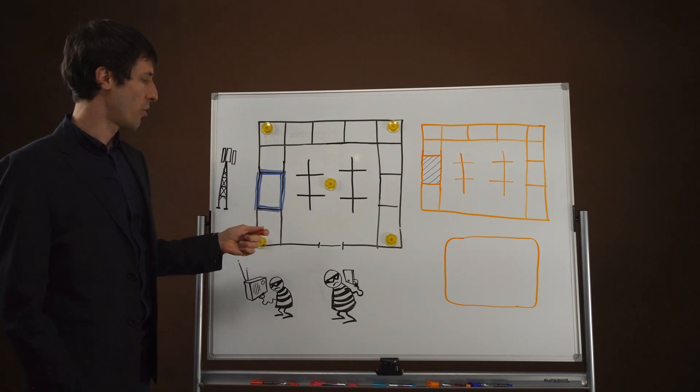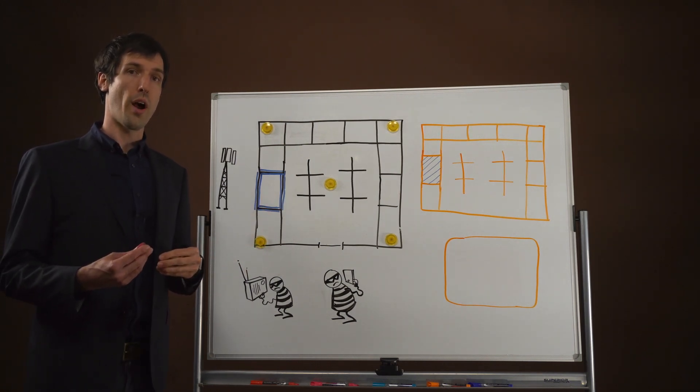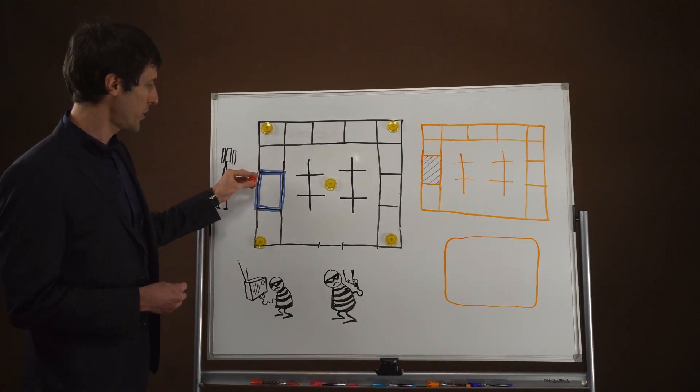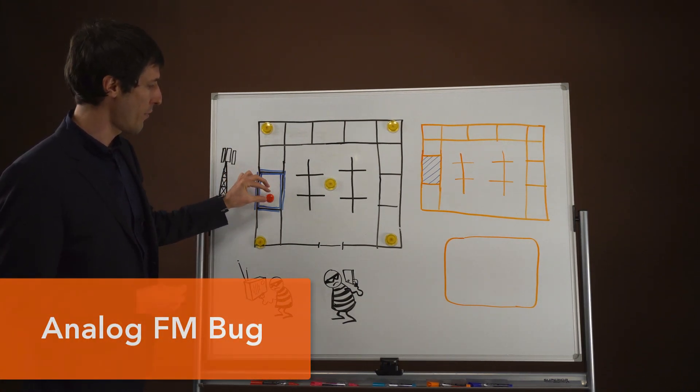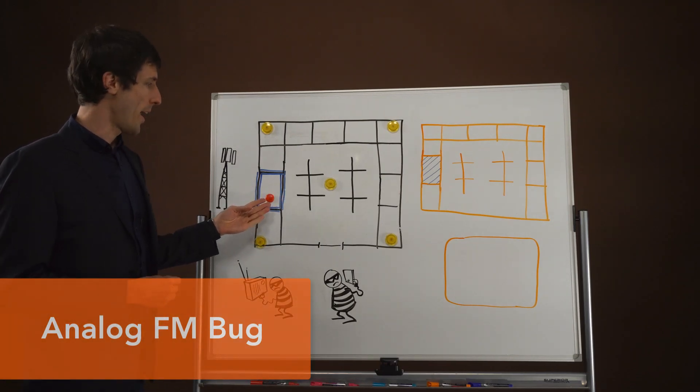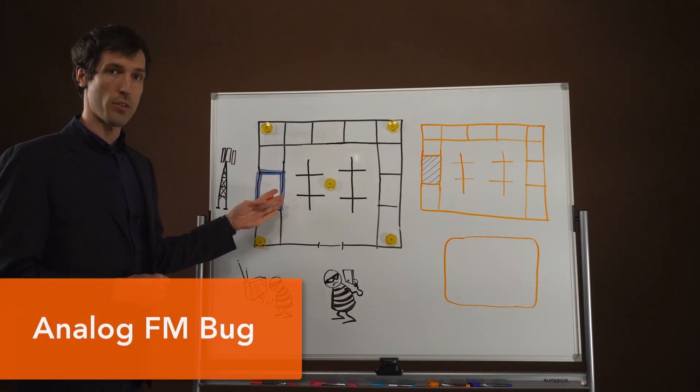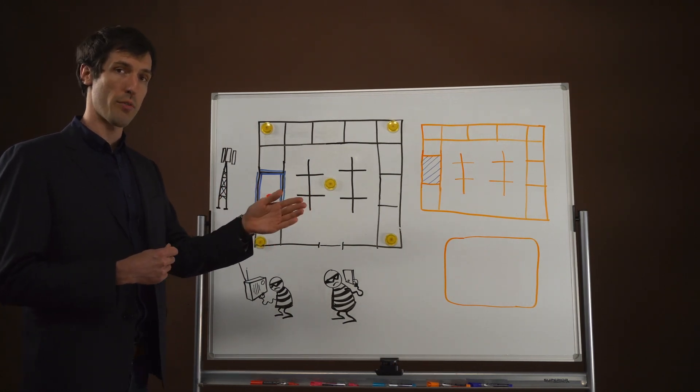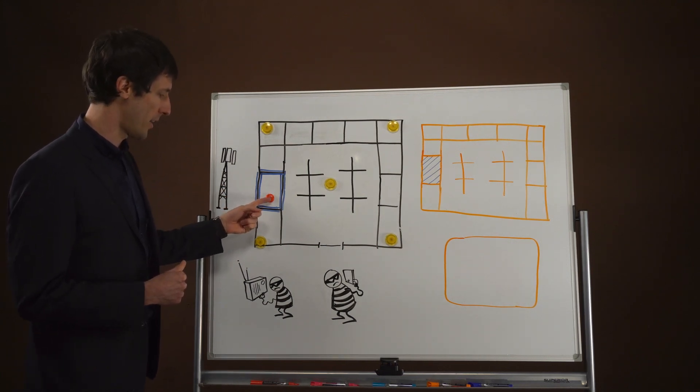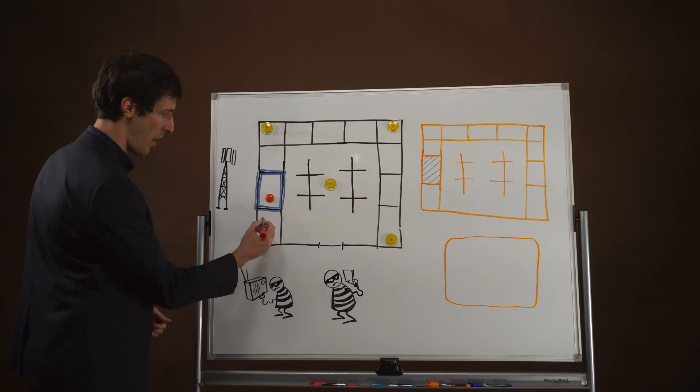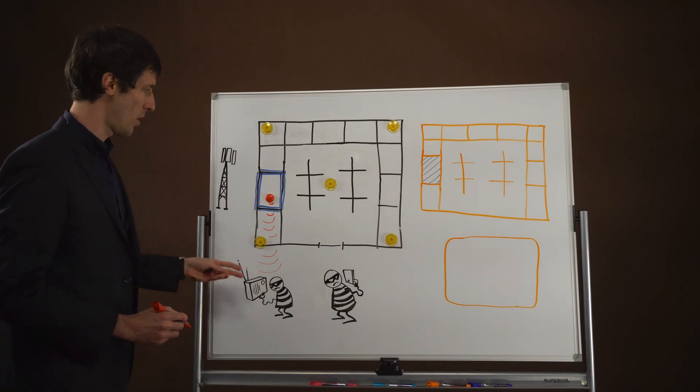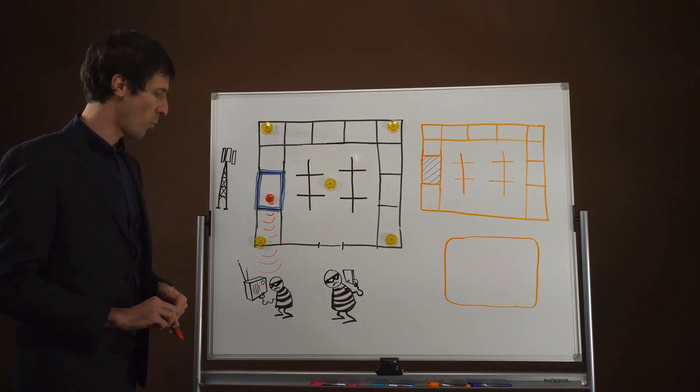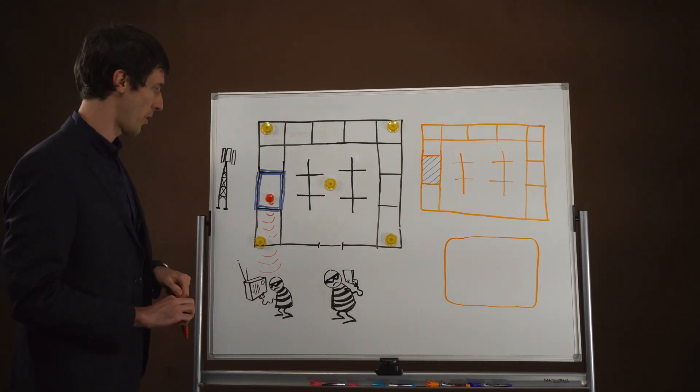Two options are the use of either an analog FM bug or a GSM bug. In the first instance, an attacker might place an FM bug under a table and when it detects voice activity within the room, it will begin transmitting using FM but often on a much higher frequency than conventional FM radio. An attacker would then use an FM radio receiver to receive these conversations. The information is just communicated wirelessly and the attacker can record these conversations for later review.